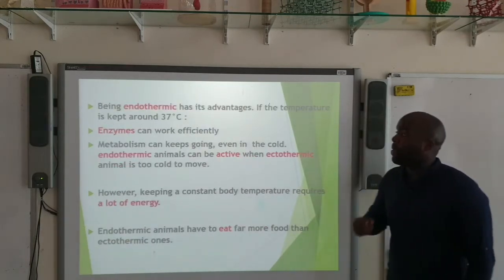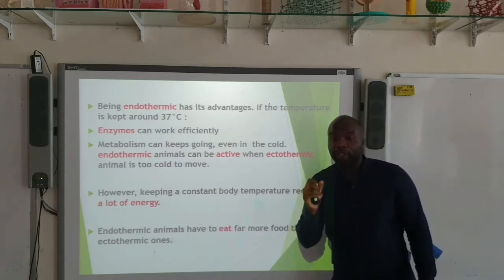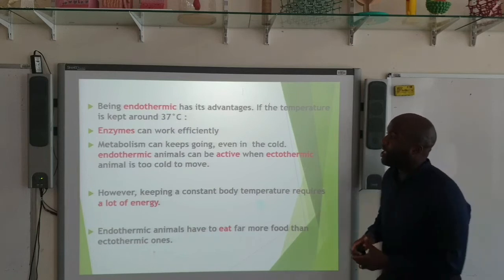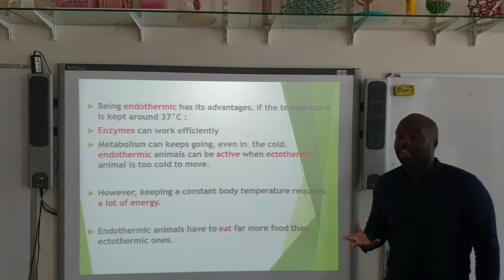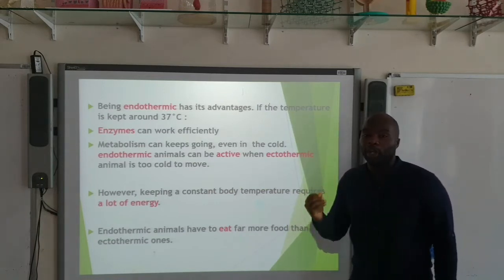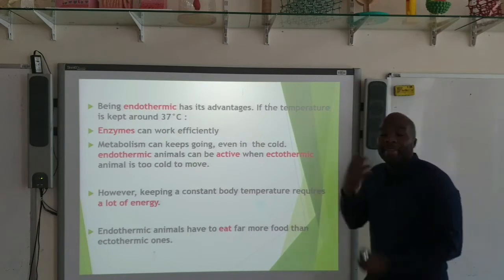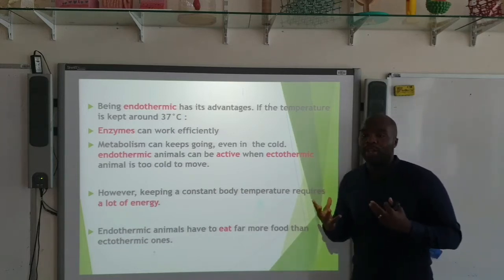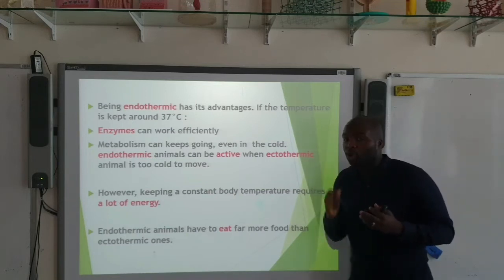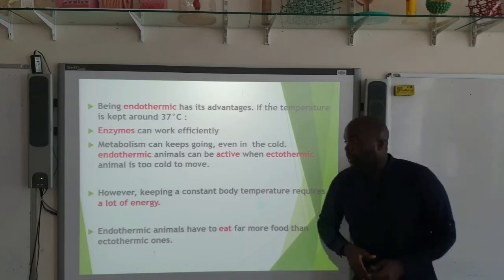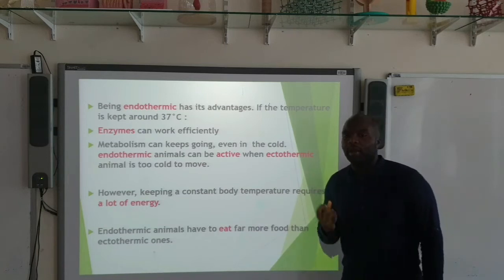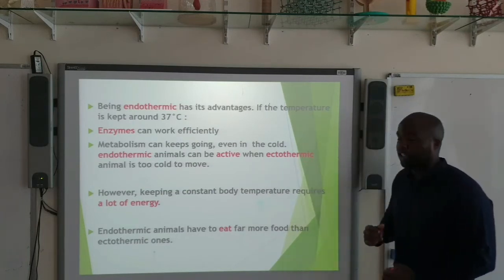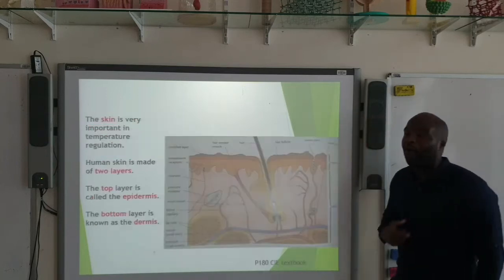Being an endothermic animal has its advantages. The temperature can remain at around 37 degrees, within that narrow limit. Why is this a benefit? It benefits enzyme activity — enzymes have an optimum temperature that they work at. It means that metabolism can keep going in endothermic organisms even if it's cold, so endothermic organisms can keep moving in cold conditions when it's sometimes too cold for an ectothermic organism to move. The downside is that maintaining a constant internal temperature requires a lot of energy, meaning endothermic animals have to eat a lot more food.